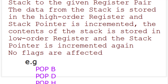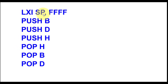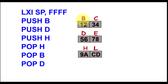Now let us see an animation based on these instructions. The animation starts with LXI SP FFFF. Generally, when we initialize the stack pointer we use the highest available memory location, so in 8085 that is FFFF. Then we use PUSH B, PUSH D, and PUSH H, and when popping we pop in the order POP H, POP B, then POP D. We assume the registers hold: B=12, C=34, D=56, E=78, H=9A, L=CD.